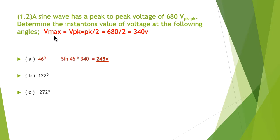Here's the basic answer: our Vmax we've worked at 340 volts. Our first angle is sine 46 multiplied by 340, giving us 245 volts. Our second one, sine 122 degrees multiplied by 340 gives us 288 volts. And last, sine 272 times 340 gives us minus 338 volts.